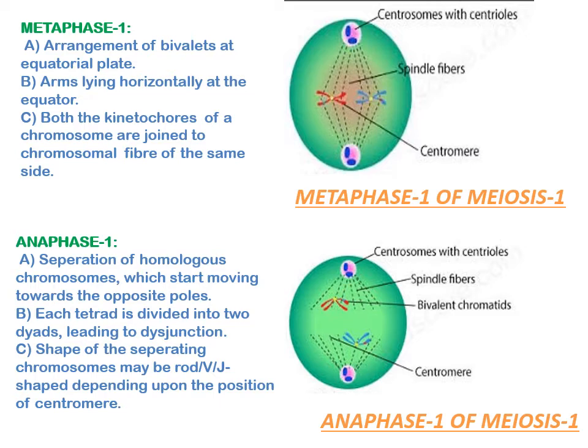In anaphase 1, homologous chromosomes separate and start moving towards opposite poles, so each tetrad is divided into two dyads. Anaphase 1 involves the reduction of chromosome number — this phenomenon is known as disjunction. The shape of the separating chromosomes may be rod, J, or V-shaped depending upon the position of the centromere.